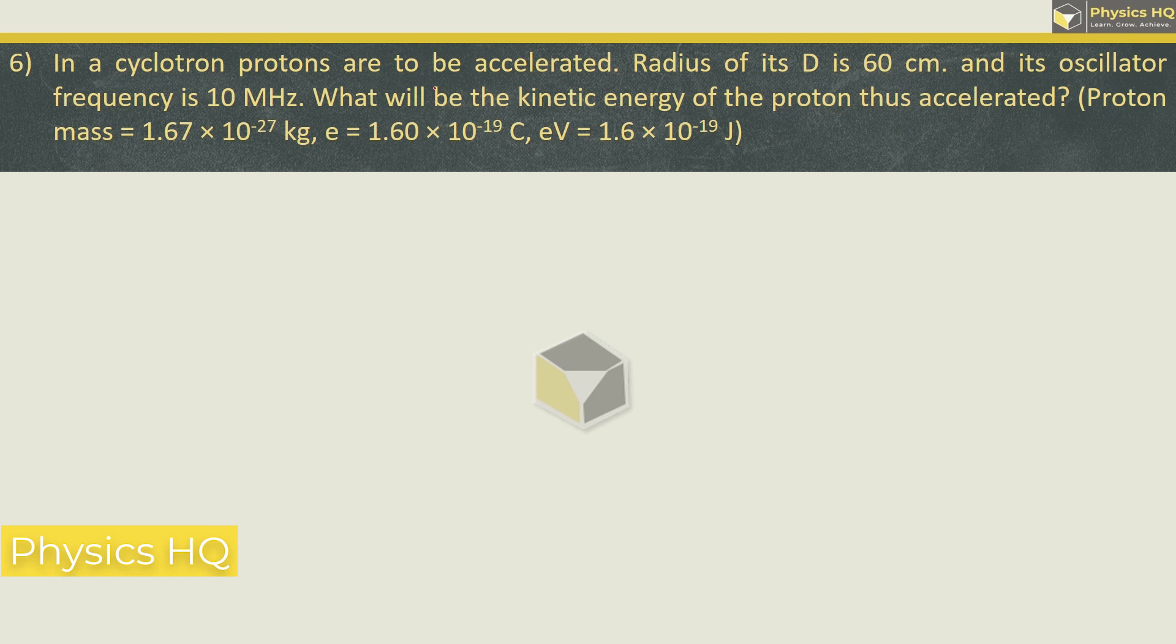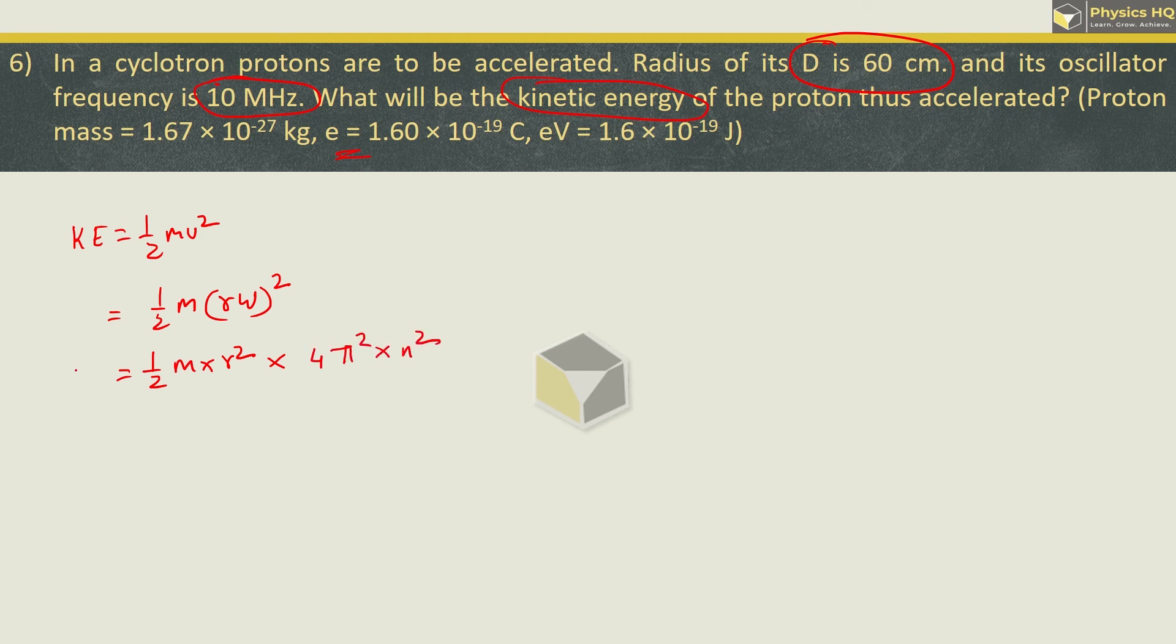Lastly, in a cyclotron protons are to be accelerated. Radius of its D is 60 cm and its oscillator frequency is 10 megahertz. What will be the kinetic energy of the proton thus accelerated? Now we know that kinetic energy is given by the formula half mv². This is half m, for velocity we can write r ω which is 2πn. Its square is 4π²n².